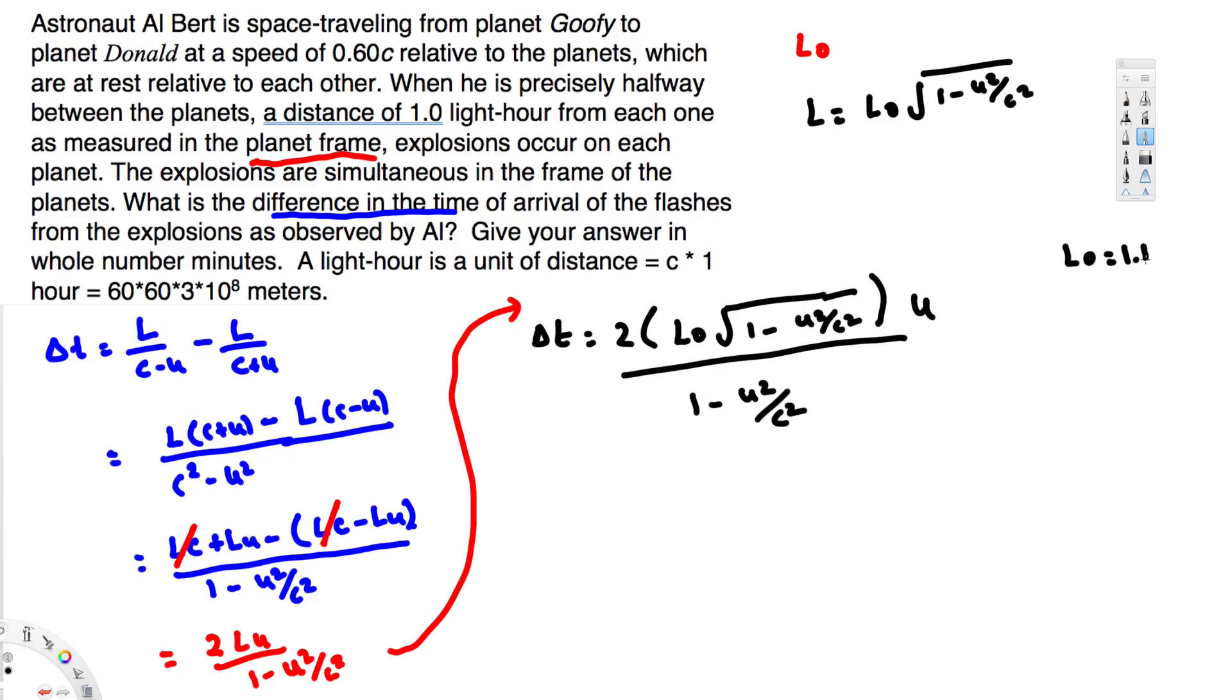Let's go ahead and plug in the values. This is 2 times 1 light-hour times the square root of (1 - 0.6c²/c²), over (1 - 0.6c²/c²).